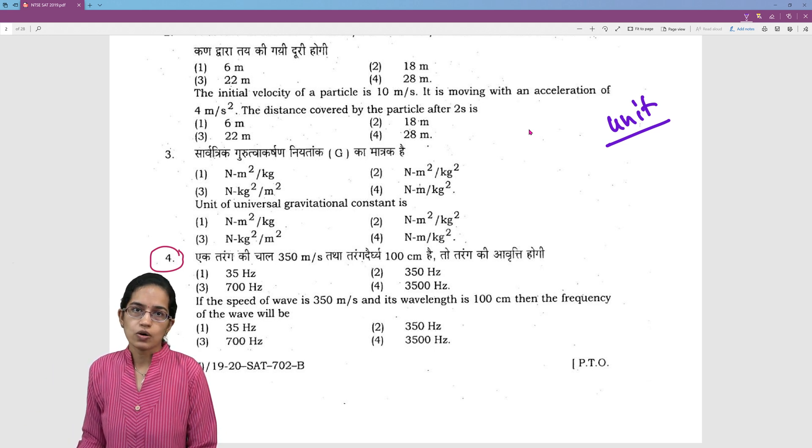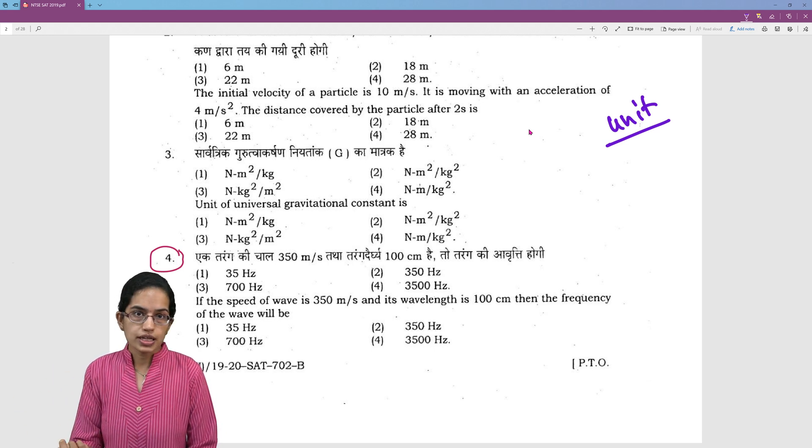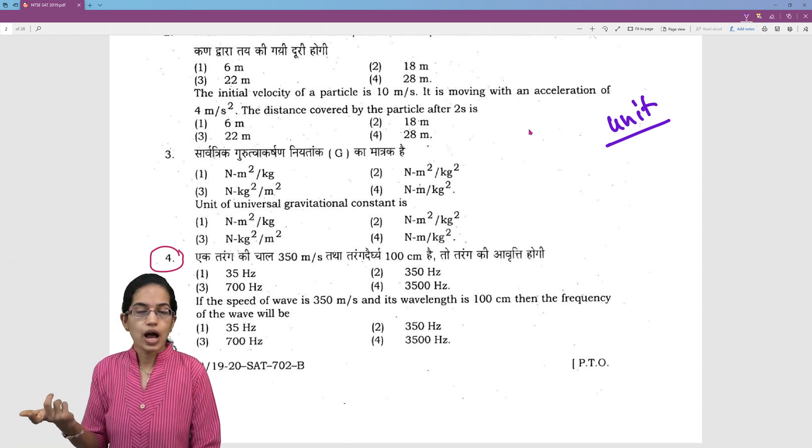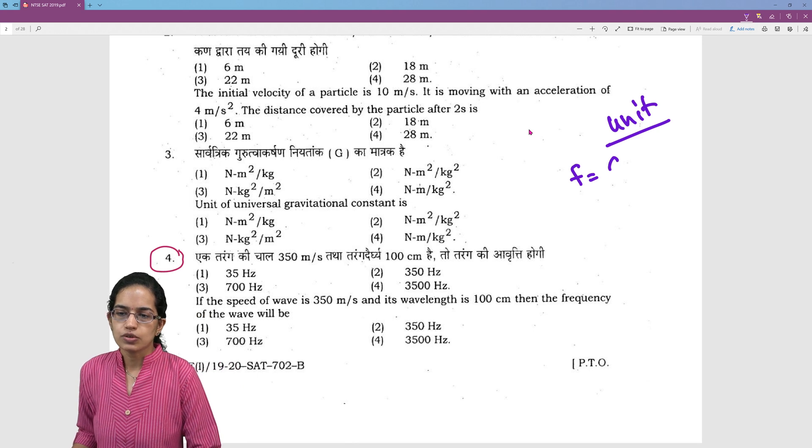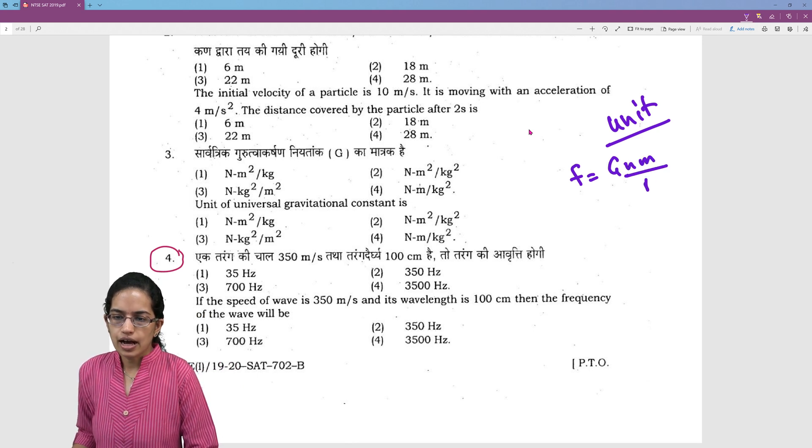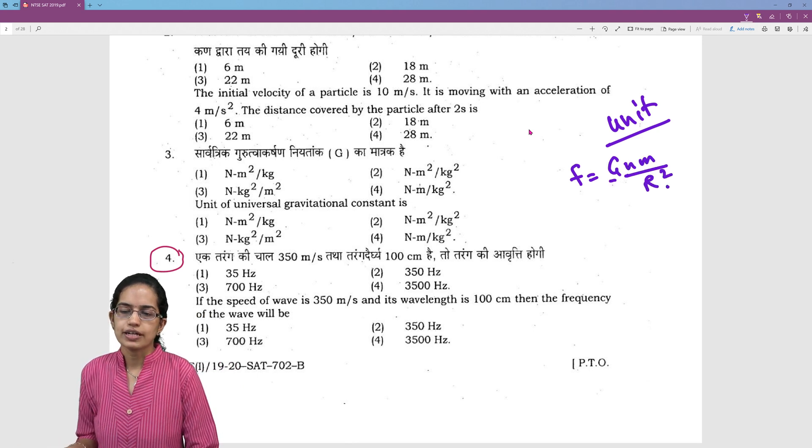For example the gravitational constant - what is the unit here you have to calculate and you have to know that even if you do not calculate let's remember F is equal to GMM by R square. Now with this you can find out the value of G.